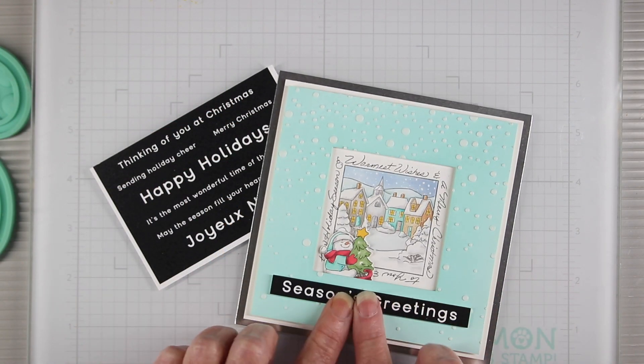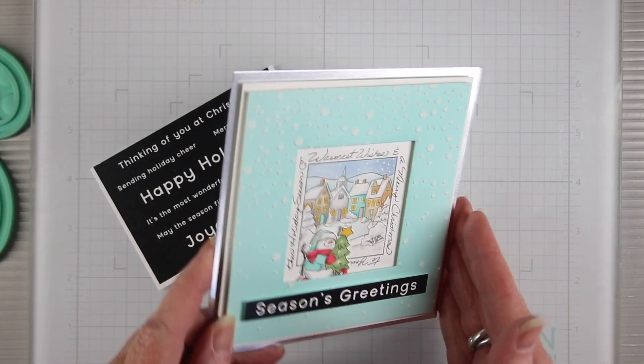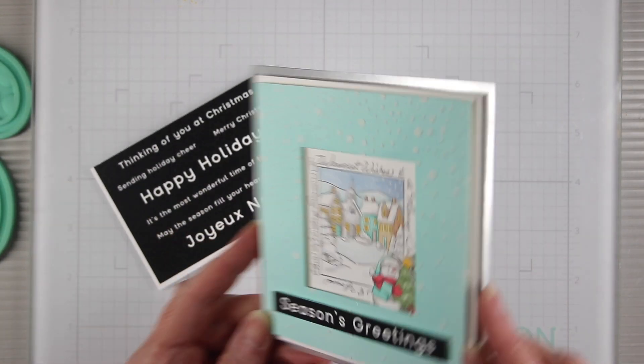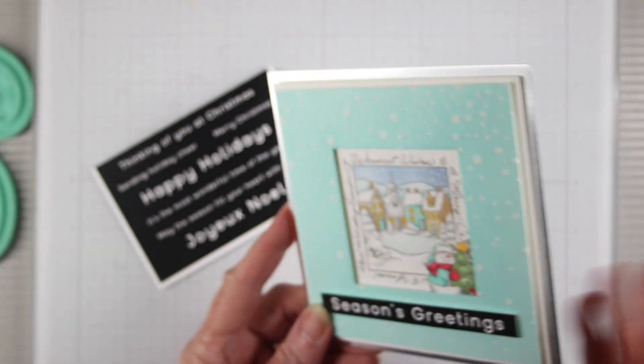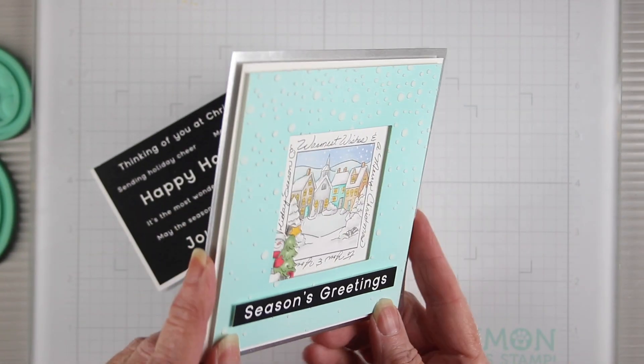To finish this off, I've added one of the Simon Says Stamp reverse sentiment strips and this is my little guy as he slides across. The more that you move him, the more freely he'll scoot across, so I love the interaction of having a slider.